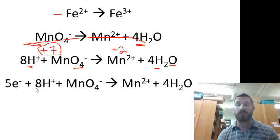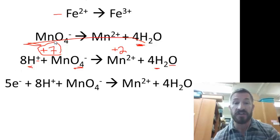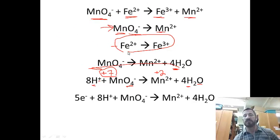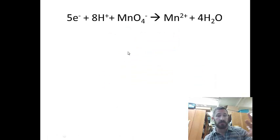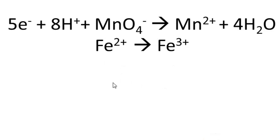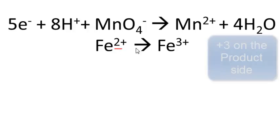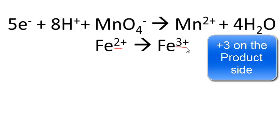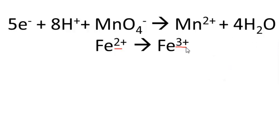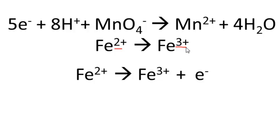The permanganate half-reaction is now completely balanced. Now let's balance the iron half-reaction: Fe²⁺ → Fe³⁺. There are no oxygens or hydrogens, so we go straight to balancing charges. The reactant side has a charge of +2 and the product side has +3, so we add one electron to the product side: Fe²⁺ → Fe³⁺ + e⁻. Both half-reactions are now balanced.